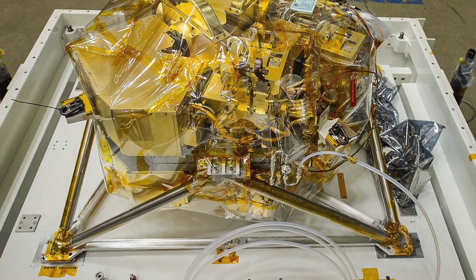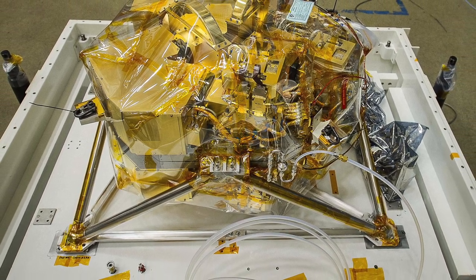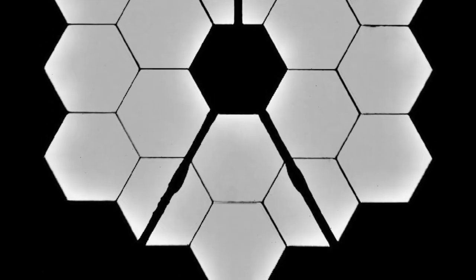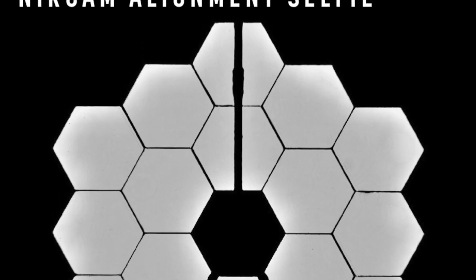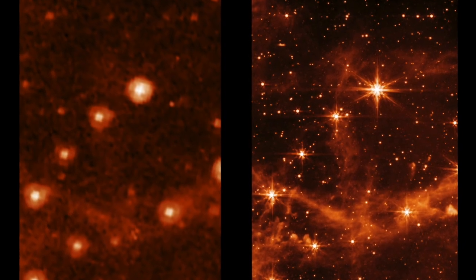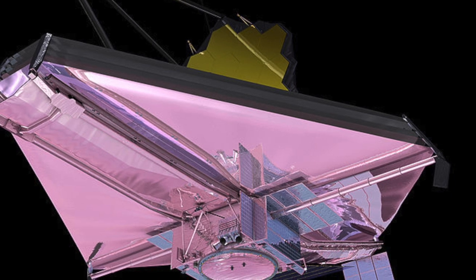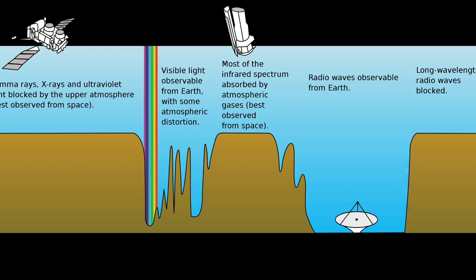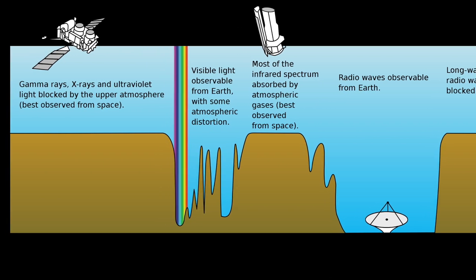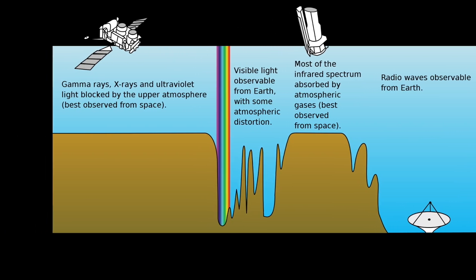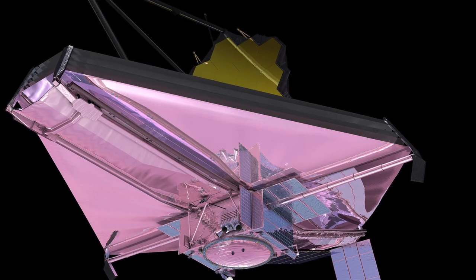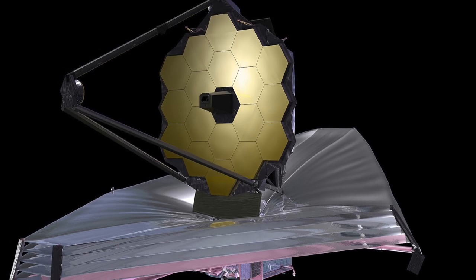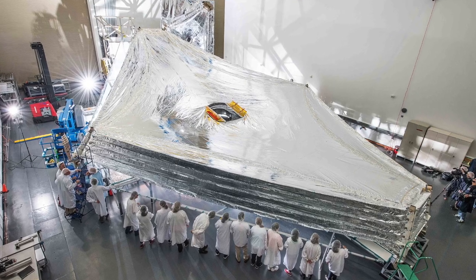The James Webb Space Telescope allocates observing time through three main programs: the General Observer's Program, the Guaranteed Time Observations Program, and the Director's Discretionary Early Release Science Program. The GTO Program provides guaranteed observing time to scientists who contributed to the development of the observatory's hardware and software. The GEO Program allows all astronomers to apply for observing time and makes up the majority of the total observing time. Proposals for the GEO Program undergo peer review by a time allocation committee, similar to the process used for the Hubble Space Telescope.